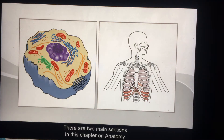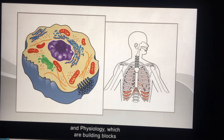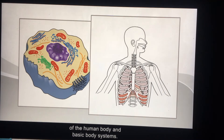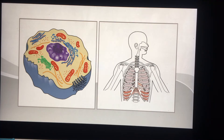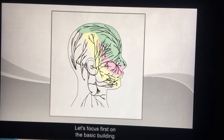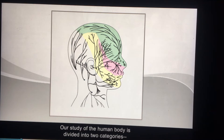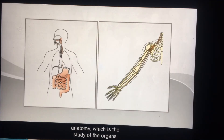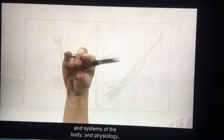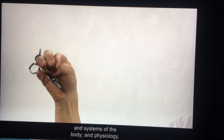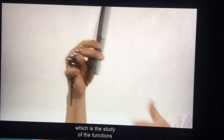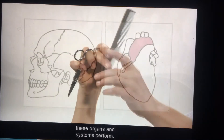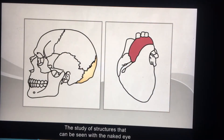There are two main sections in this chapter on anatomy and physiology, which are building blocks of the human body and basic body systems. Our study of the human body is divided into two categories: anatomy, which is the study of the organs and systems of the body, and physiology, which is the study of the functions these organs and systems perform.